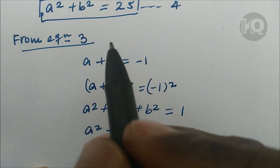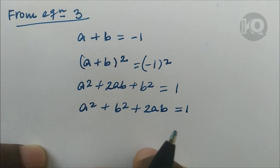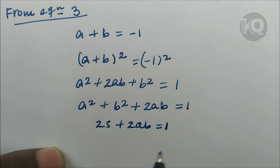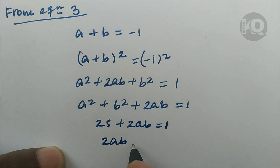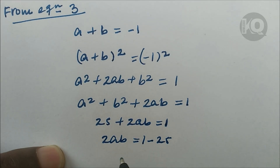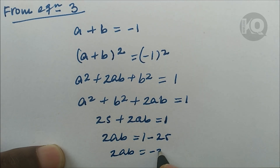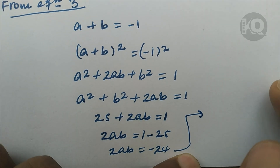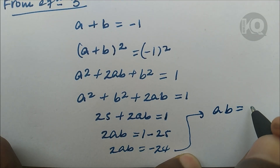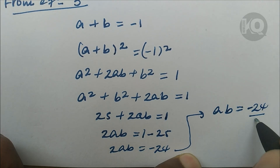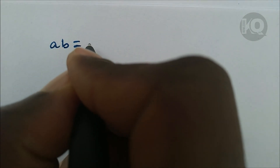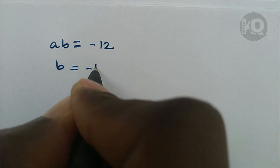From equation four, a squared plus b squared equals 25. Substituting gives 25 plus 2ab equals 1, so 2ab equals 1 minus 25 equals minus 24, and therefore ab equals minus 12.